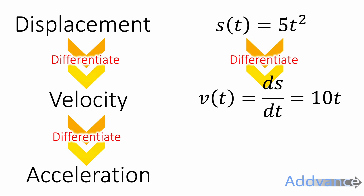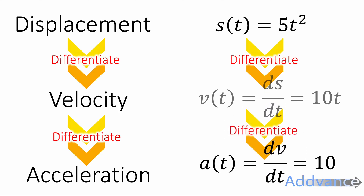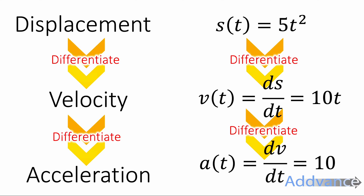You should know that 5t² differentiates to 10t. If we differentiate that again, we get a(t) = 10, since 10t differentiates to 10. So displacement differentiates to velocity, and velocity differentiates to acceleration.